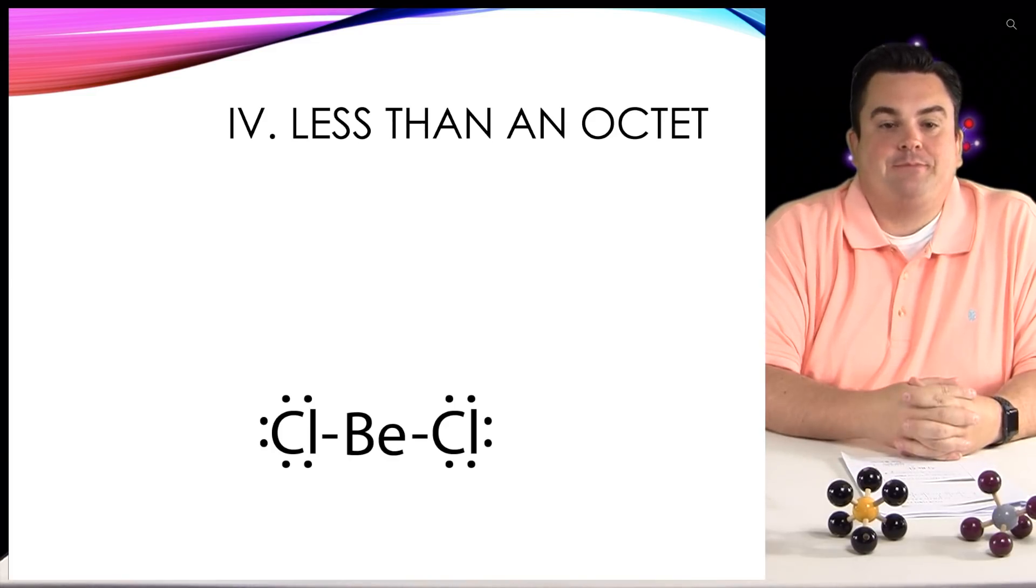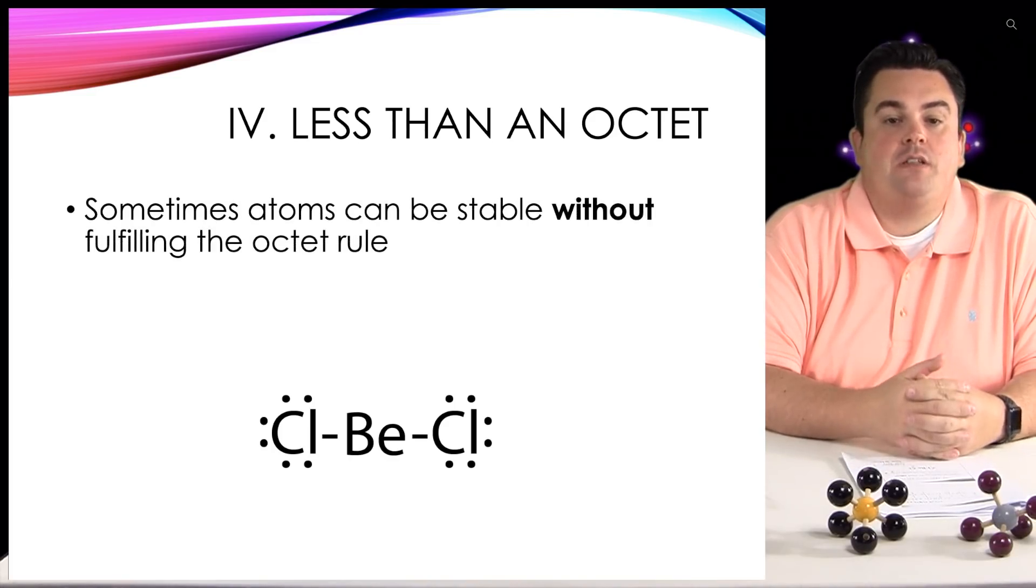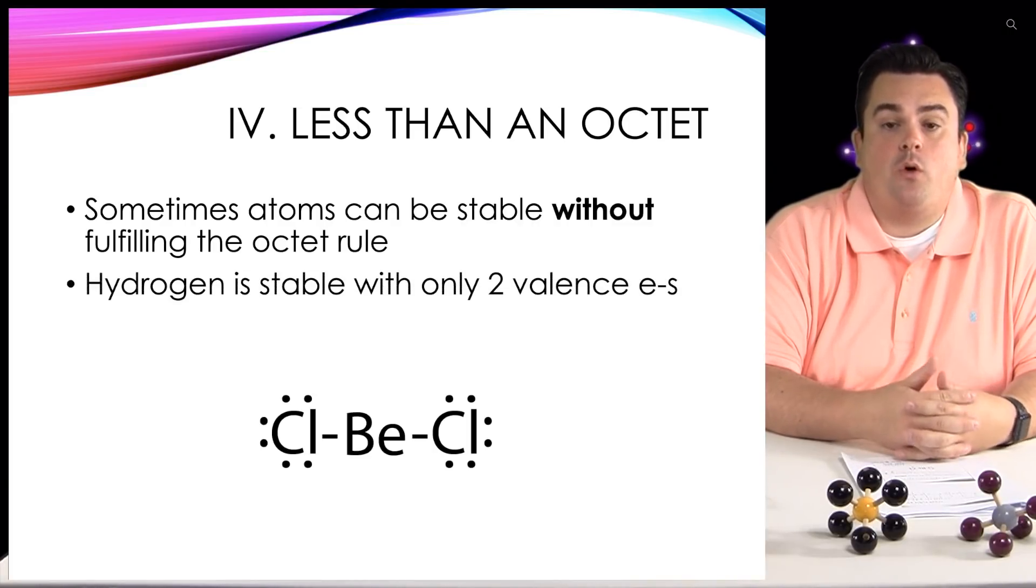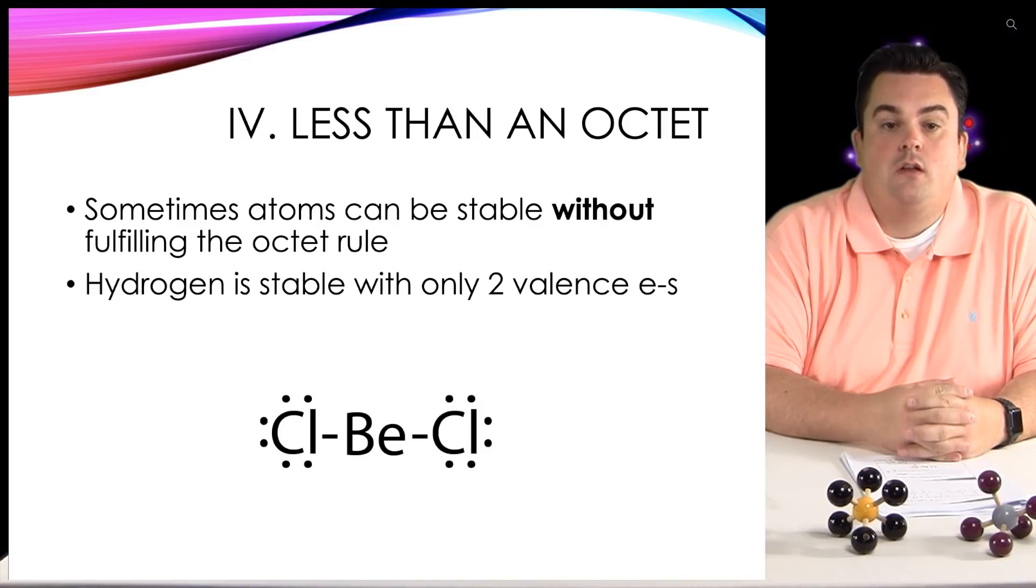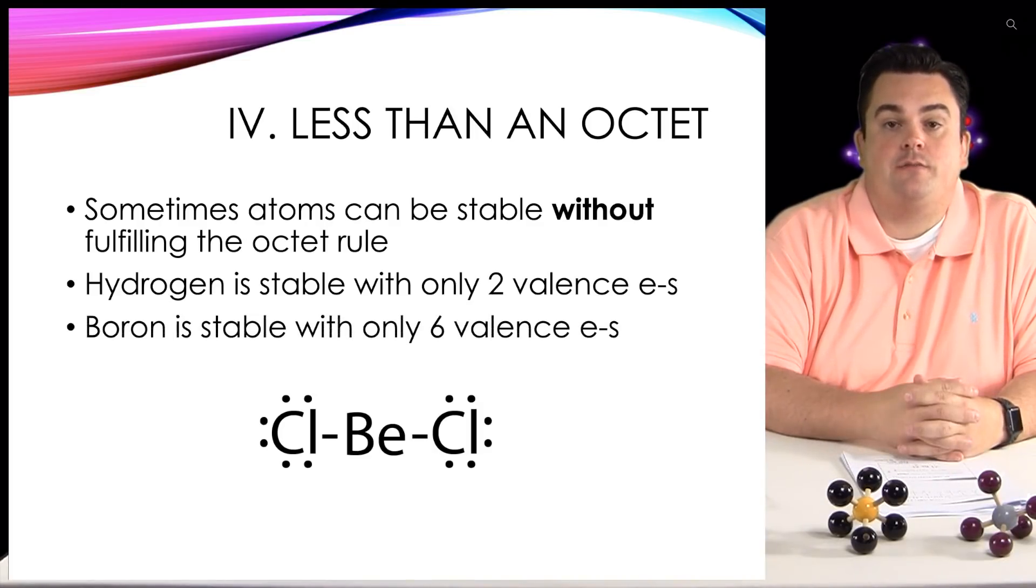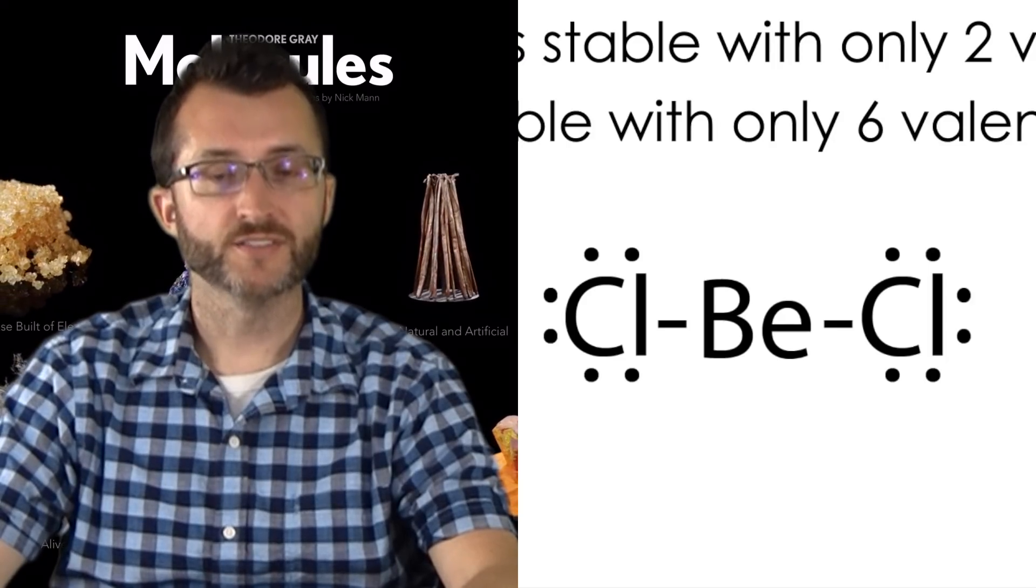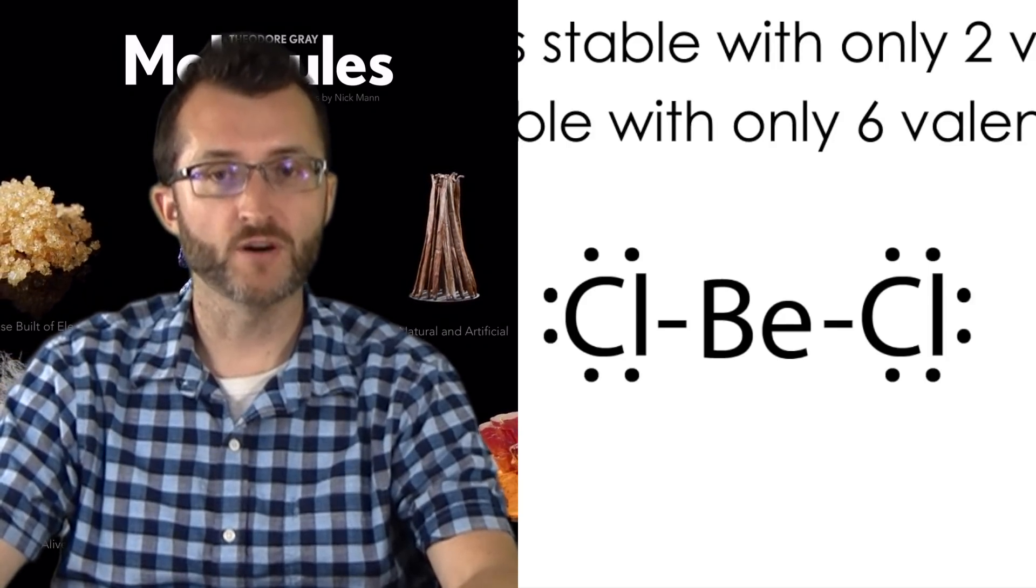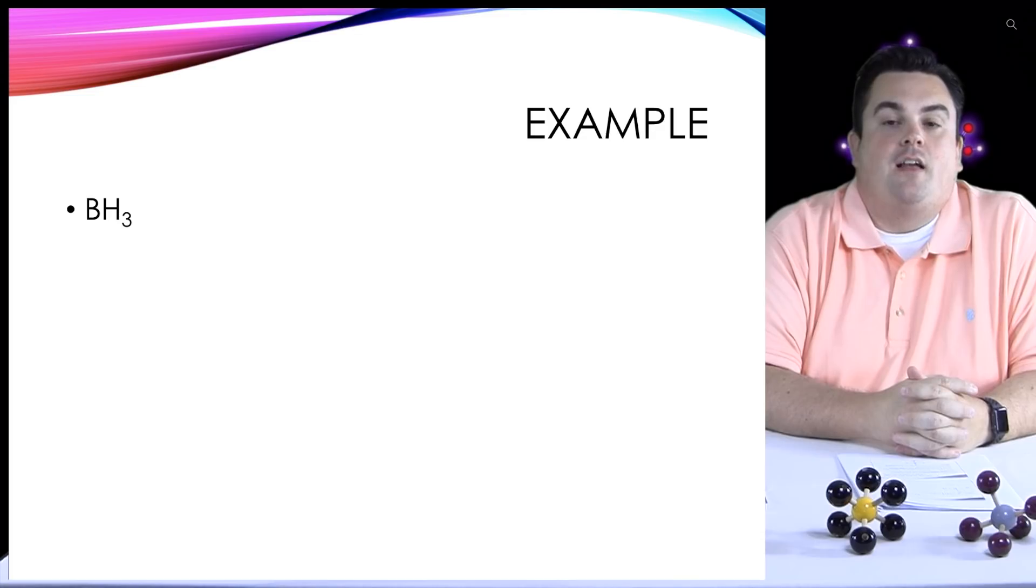Less than an octet. Sometimes atoms can be stable without fulfilling the octet rule. Hydrogen, as we know, is stable with only two valence electrons. Boron is stable with only six valence electrons. If you look at our picture below, there's another example. Beryllium is stable with four valence electrons.